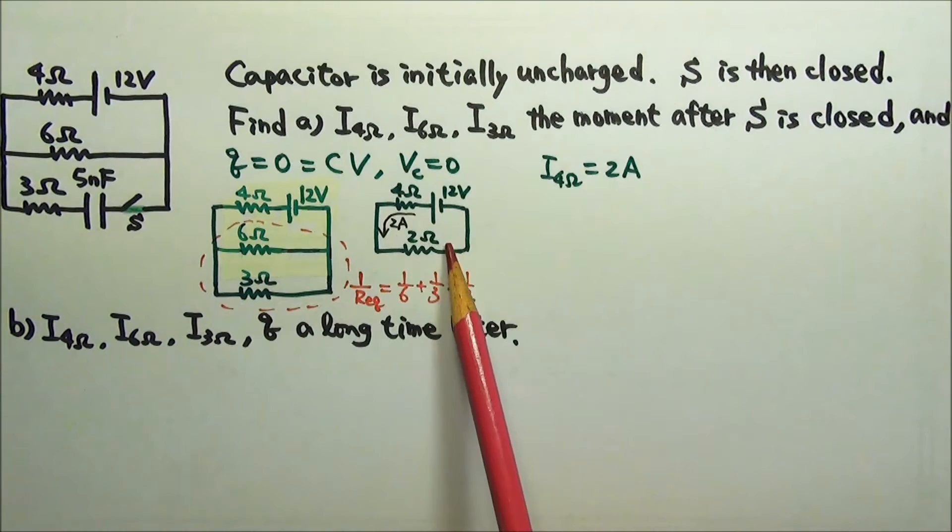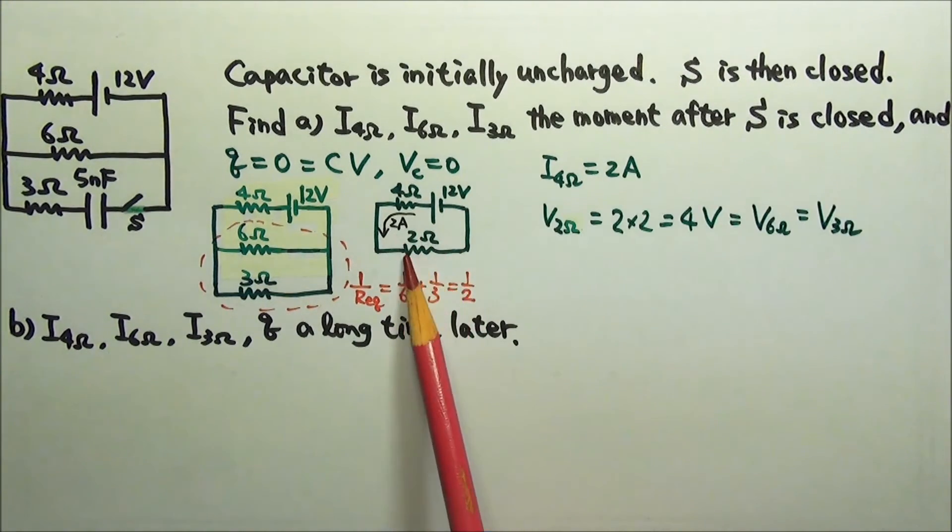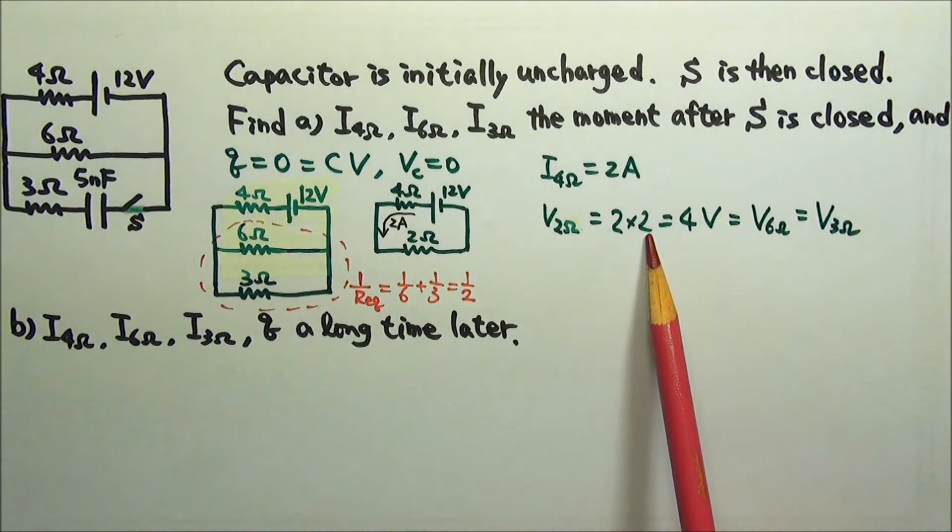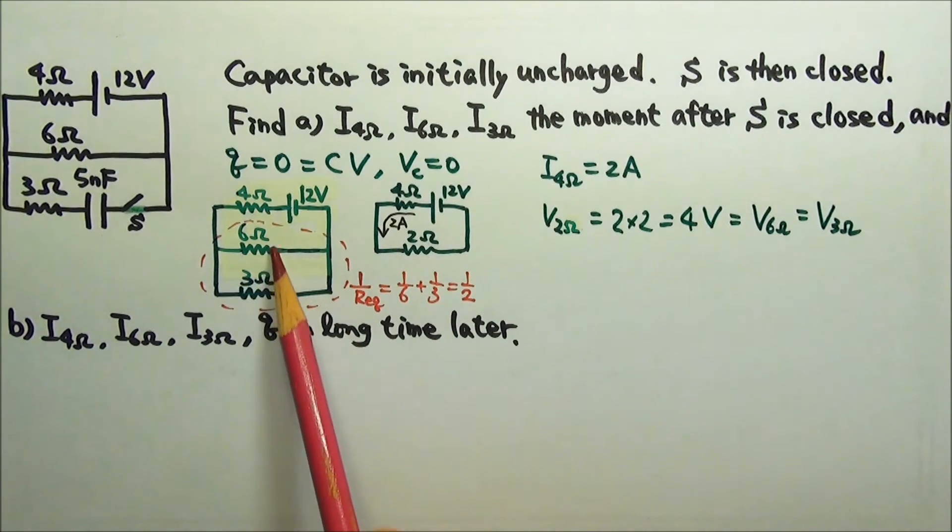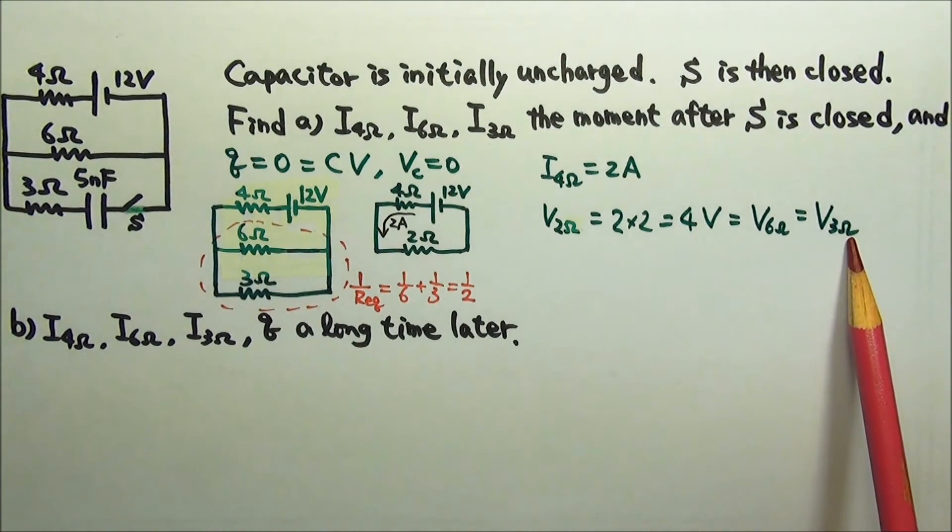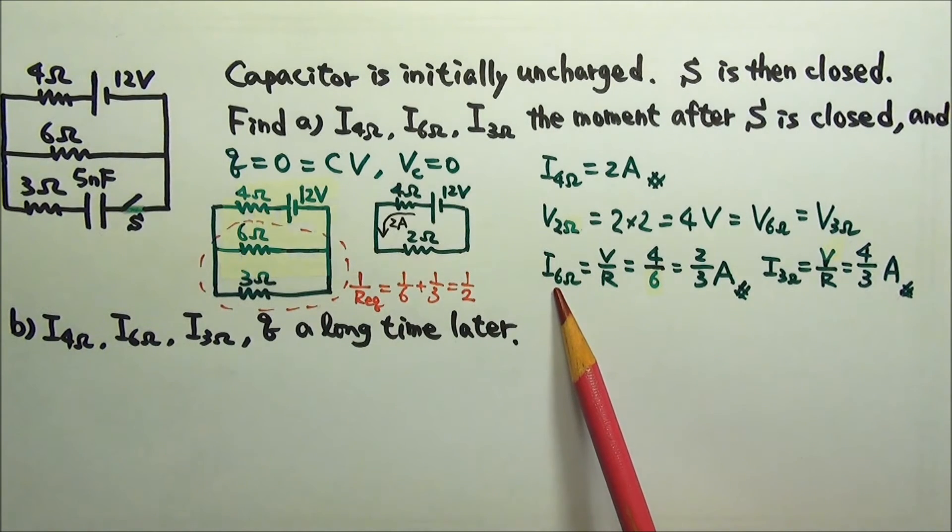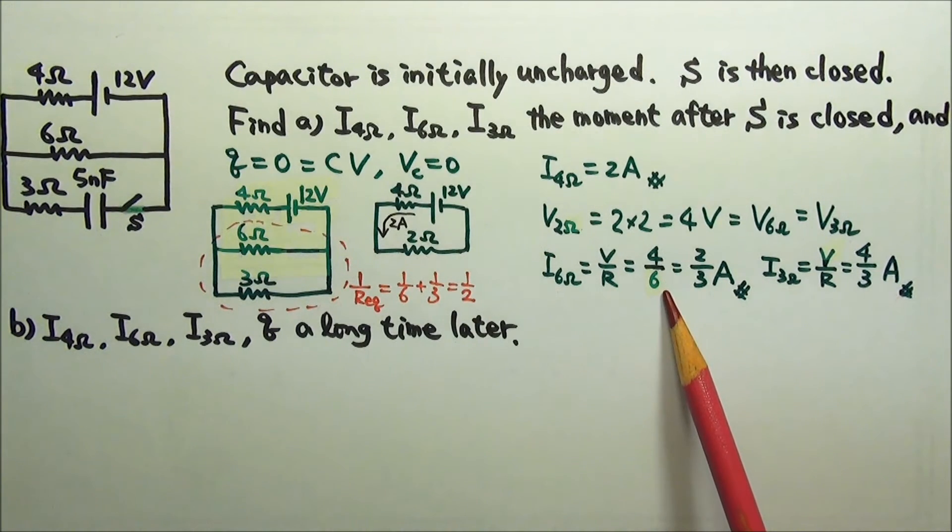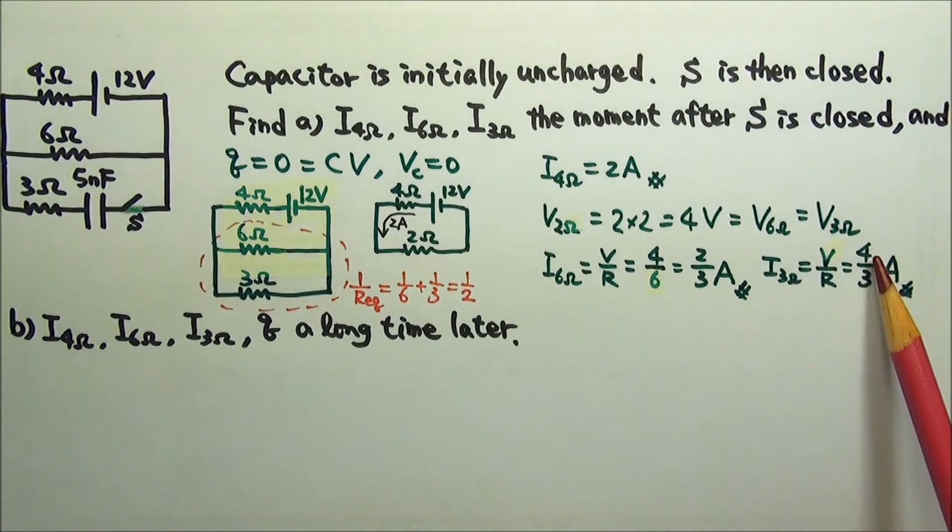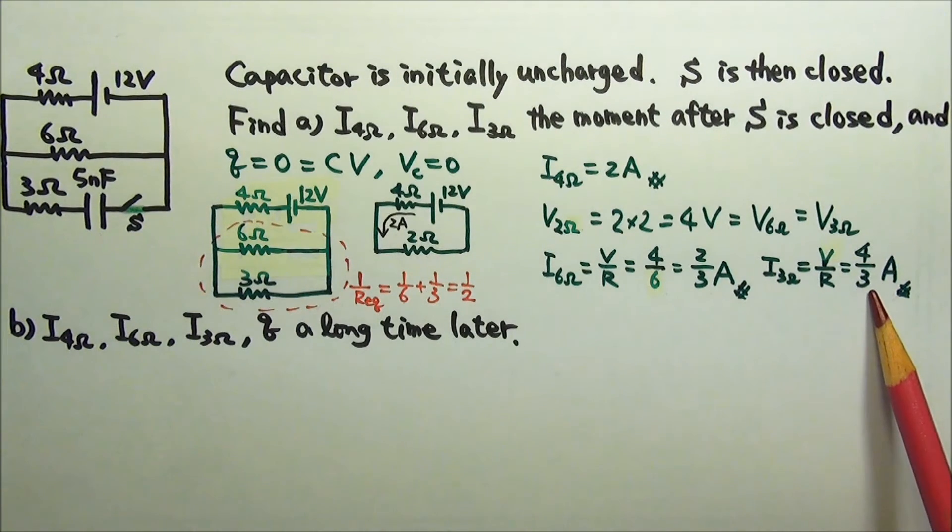So it will be convenient for us to find the voltage across the 2 ohms. The voltage across the 2 ohms is I times R, 4 volts. So these two, they get the same 4 volts. So the current in the 6 ohms is 4 volts divided by 6 ohms. And this one is 4 volts divided by 3 ohms.